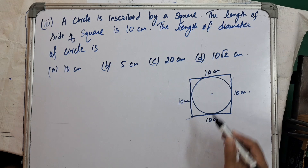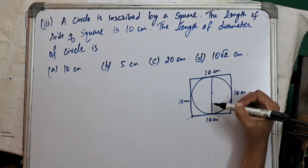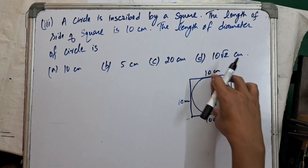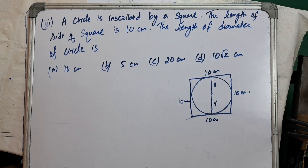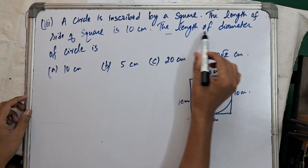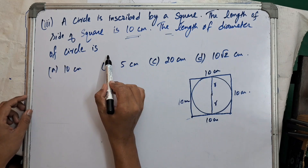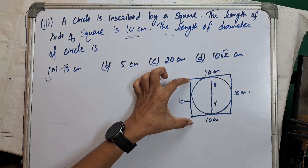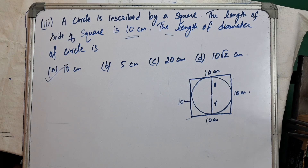We are asked to find the diameter of the circle. The diameter equals the radius plus the radius, and this diameter is equal to the side of the square, which is 10 centimetres. So option A, 10 centimetres, is the correct answer.